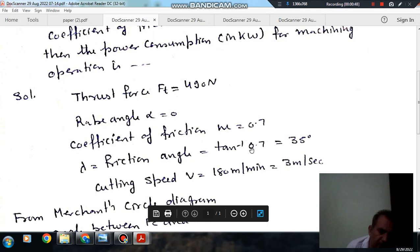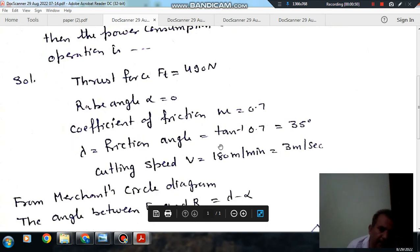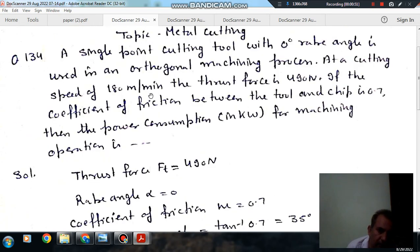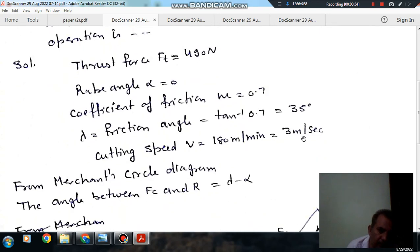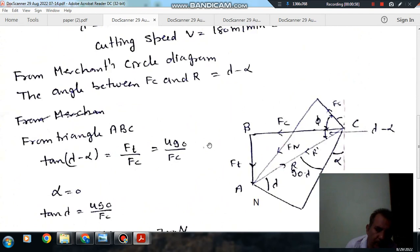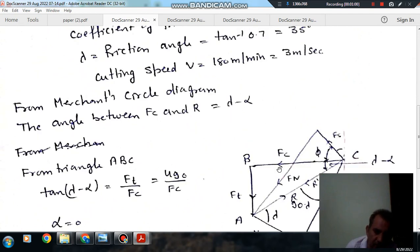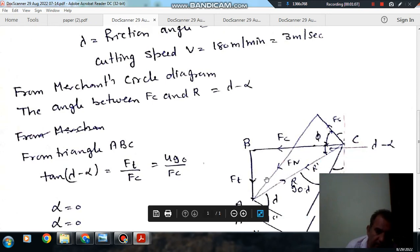So lambda is tan inverse of 0.7, that is 35 degrees, and cutting speed is given as 180 m/min or 3 m/s. So now using merchant circle diagram, this is your merchant circle diagram. This is your Fc cutting force, this is your Ft thrust force that is given. This is your rake face, this is shear angle and friction angle lambda, and this will make a right angle triangle.